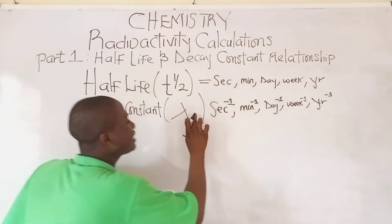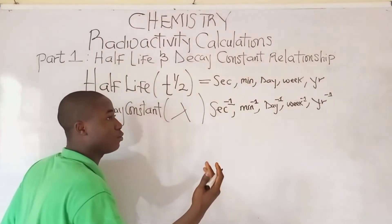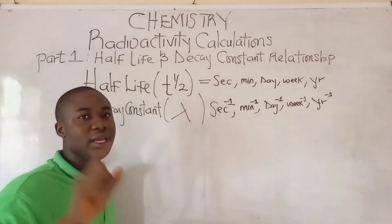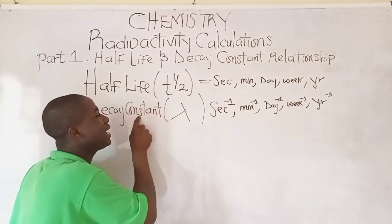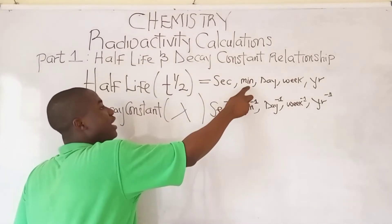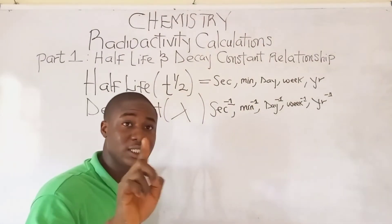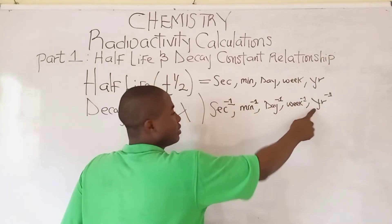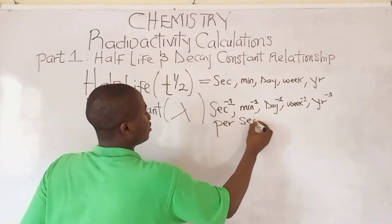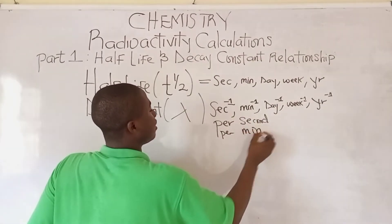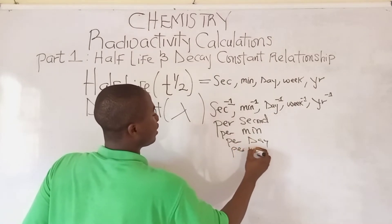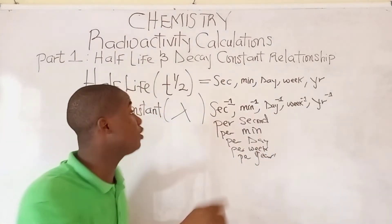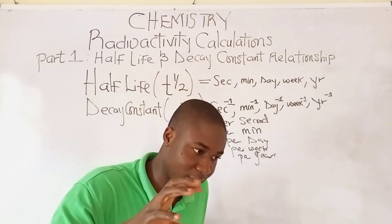How is the SI unit for the decay constant pronounced? If we want to pronounce seconds raised to the power of minus 1, we just say 'per seconds.' So if the SI unit for the half-life is in seconds, the decay constant becomes 'per seconds'; in minutes, 'per minutes'; in days, 'per days'; in weeks, 'per weeks'; in years, 'per years.' To get the SI unit for the decay constant, we need to know the correct SI unit for the half-life.